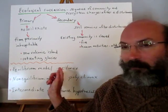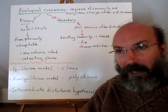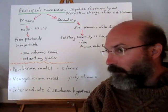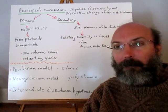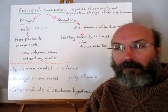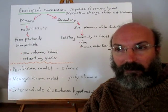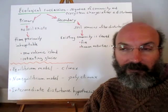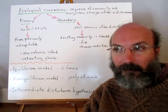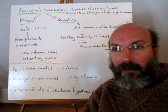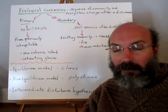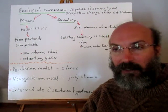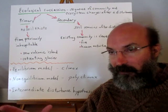However, that climax community model doesn't completely play out in nature. Some other models seem to work better. One is called the non-equilibrium model, which proposes a polyclimax — you have all these different types of communities present at the same time, just in different stages. They might be in the seed bank in the soil, or as patches within a larger community, all in different stages of development across a large spatial area.